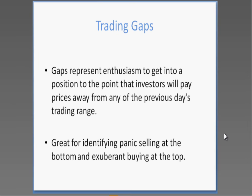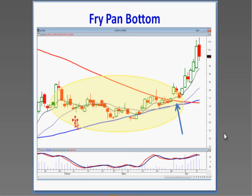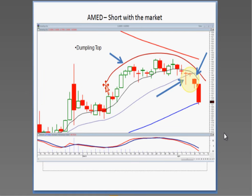Gaps also put you in high-probability situations when using patterns. The big fry pan bottom is one of the Japanese strong price patterns — what you want to see coming out the other side is great enthusiasm, represented by a gap up the next day. How long do you own it? Until you see a sell signal and a close back below the T-line. On the opposite side, the dumpling top — the opposite of a fry pan bottom — when you see that doji gap down, that tells you you're now in a very strong downtrend. Gaps are great for improving our target projections.